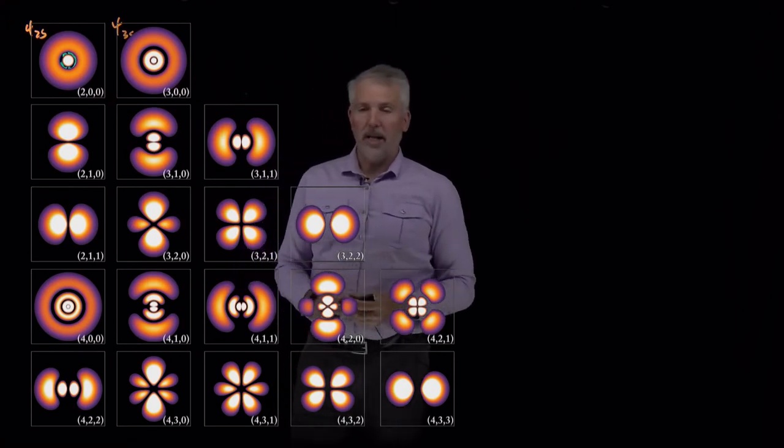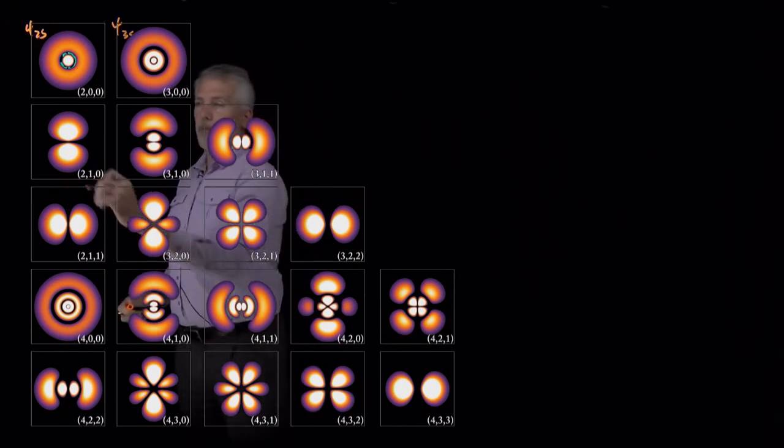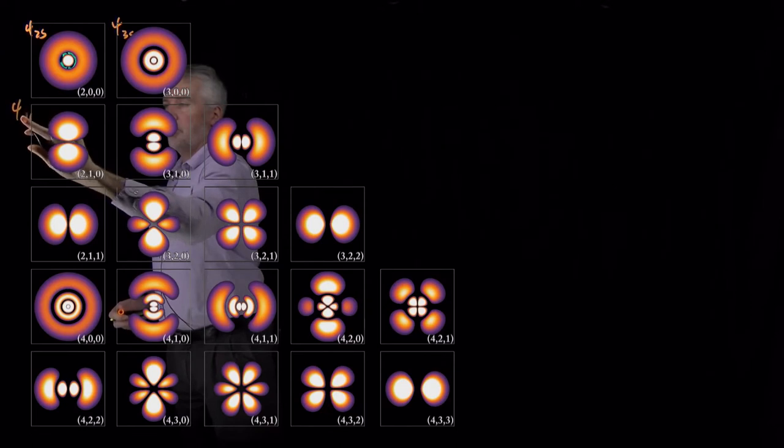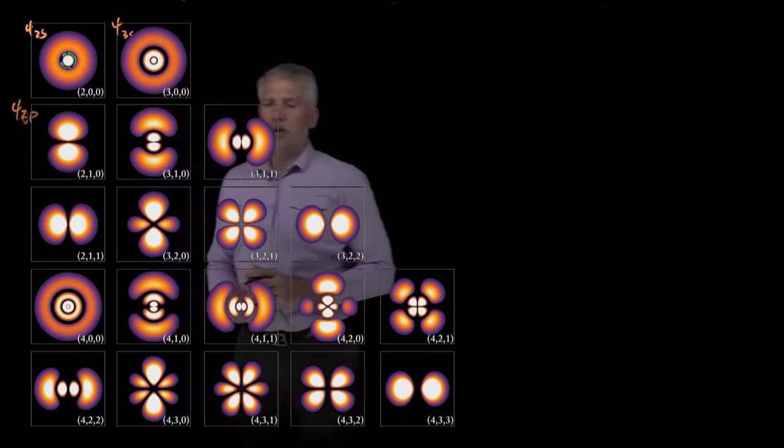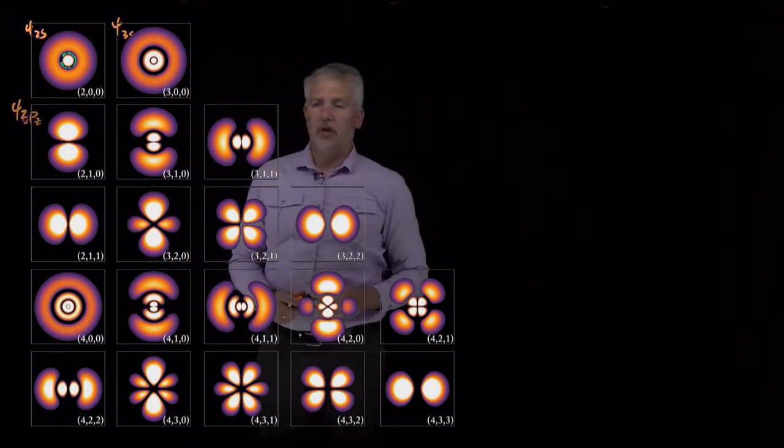When we move up to larger angular momentum quantum numbers, so when L equals 1, then we get p-type orbitals. So this is the 2p orbital, in particular the 2pz orbital, the one that's oriented along the z-axis.